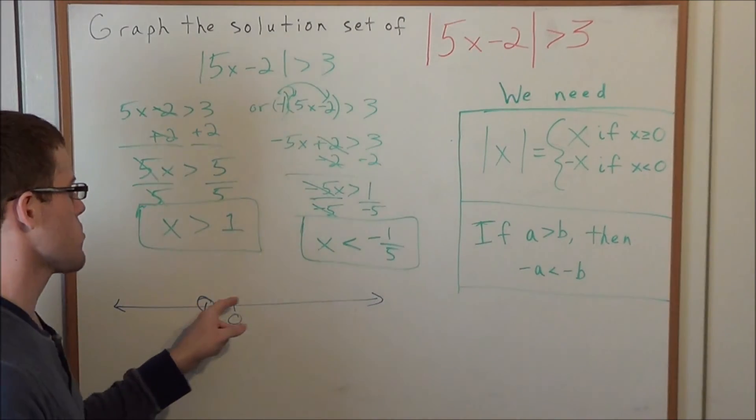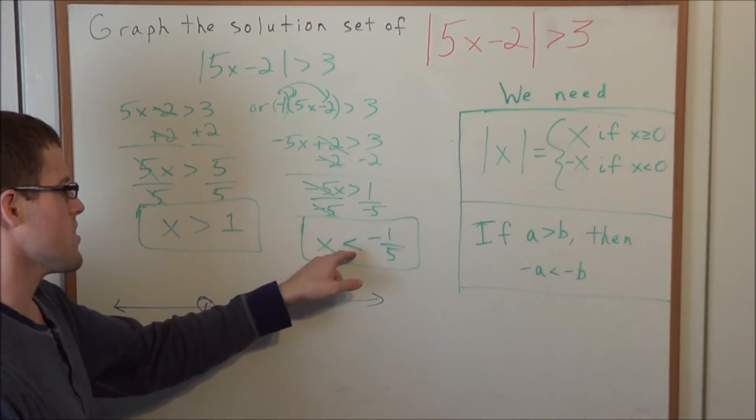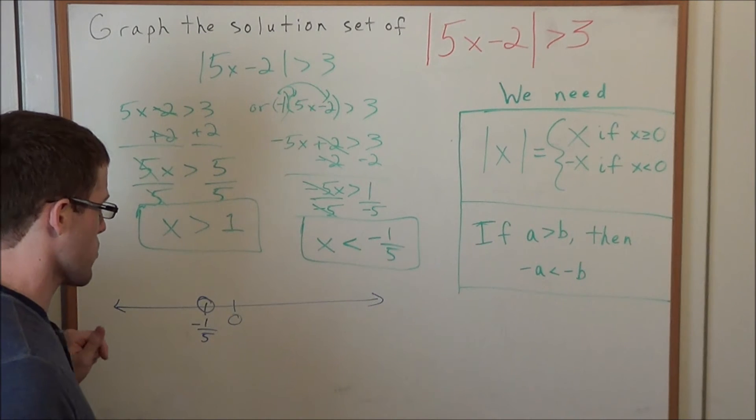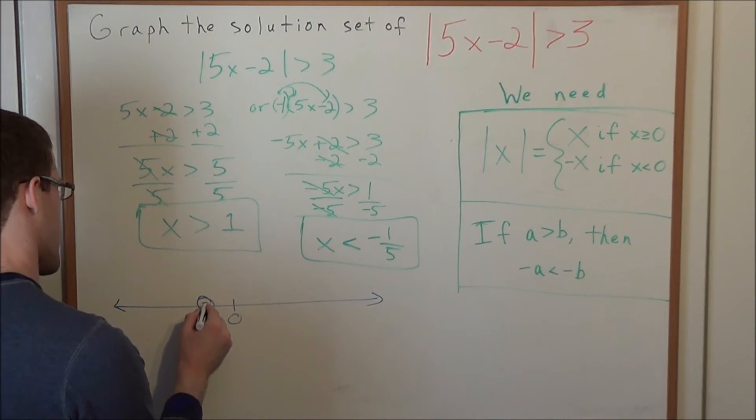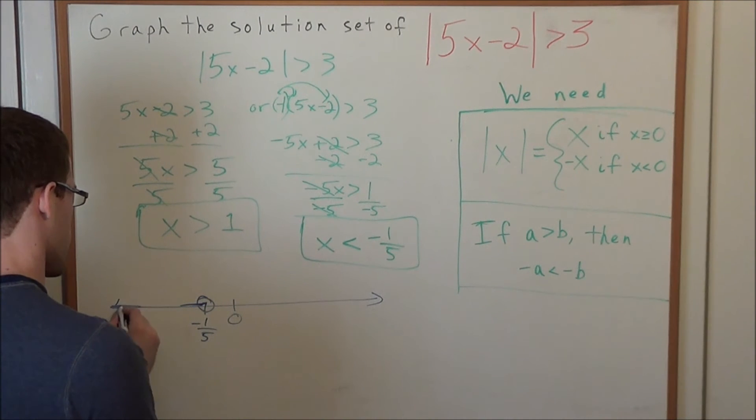Because keep in mind, we are not including the point negative one-fifth. When it's strictly less than, that means do not include the end point. Okay, so now we're going to shade everything less than negative one-fifth. So we're shading everything in this direction.